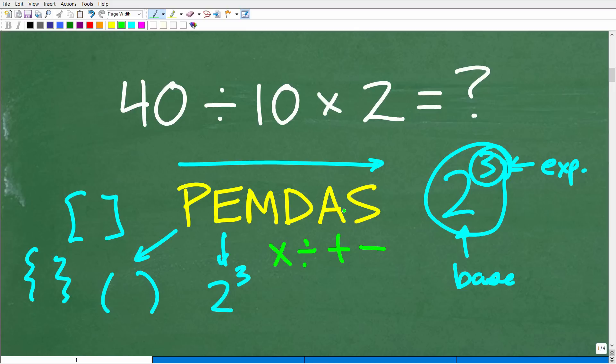So somebody might be saying, well, okay, well, Mr. YouTube math man, if, you know, you're telling me this is a checklist and it's going from left to right, the next thing on our checklist would be M. So we should do the multiplication here before division, right?